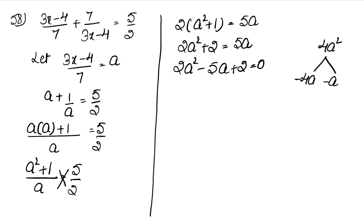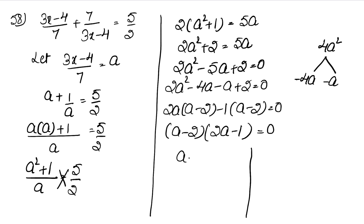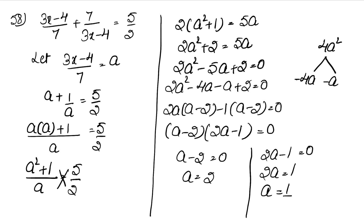Since the middle term is negative and both factors add up, both will be negative. So: 2a² − 4a − a + 2 = 0. Taking 2a common: 2a(a − 2) − 1(a − 2) = 0. Taking (a − 2) common: (a − 2)(2a − 1) = 0. So a = 2 or a = 1/2.